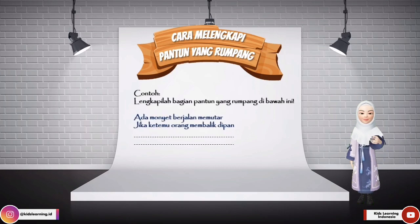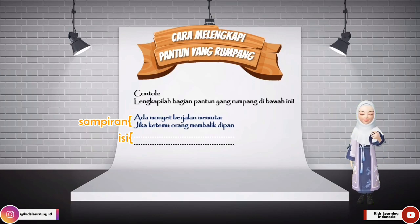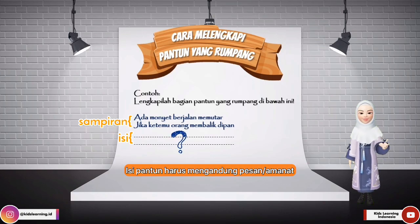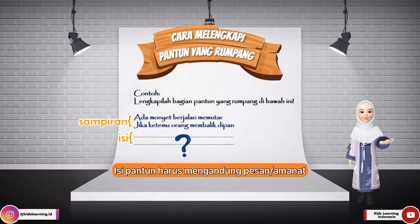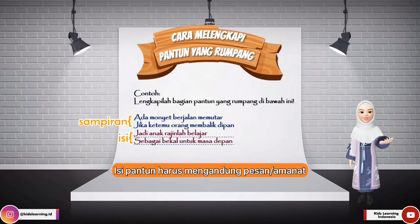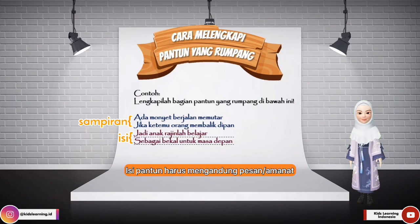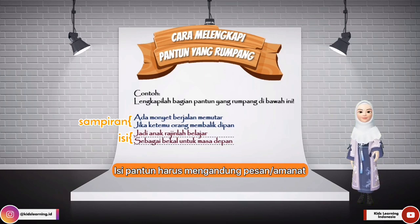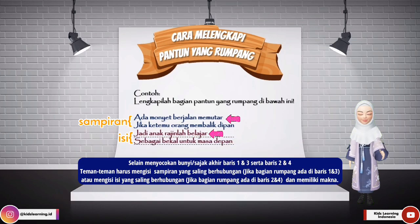Berikut adalah contoh cara melengkapi pantun yang rumpang. Di sini ada satu buah pantun yang tidak memiliki isi — baris ketiga dan keempatnya masih kosong. Jika dibaca dari baris pertama sampai keempat, akan berbunyi: 'Ada monyet berjalan memutar, jika ketemu orang membalik di pan. Jadi anak, rajinlah belajar sebagai bekal untuk masa depan.' Untuk mengisi bagian pantun yang rumpang, teman-teman harus mencocokkan bunyi dari baris ke-1 dengan baris ke-3, dan bunyi baris ke-2 dengan baris ke-4.